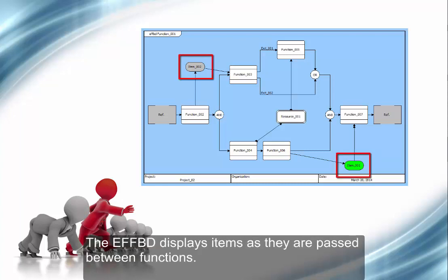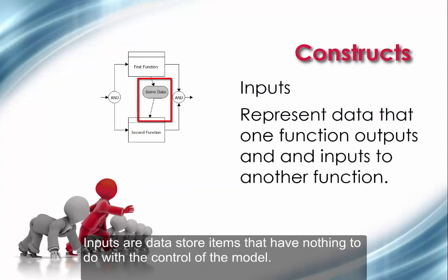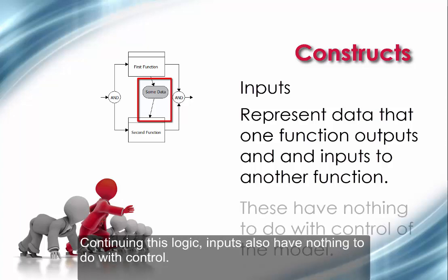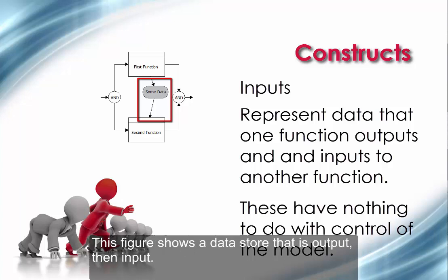The EFFBD displays items as they are passed between functions. Inputs are data store items that have nothing to do with the control of the model. They simply represent data that one function outputs and another function receives as inputs. Continuing this logic, inputs also have nothing to do with control. This figure shows a data store that is output, then input.